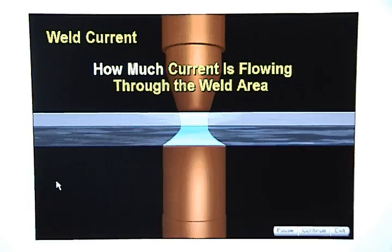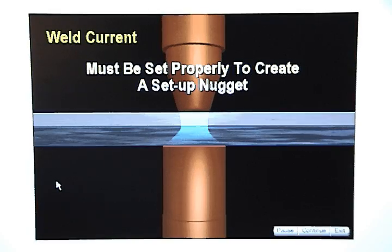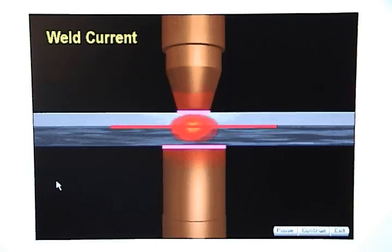Weld current refers to how much current is flowing through the weld area. It must be set properly to create a setup nugget. Weld current generates heat whenever it encounters resistance.